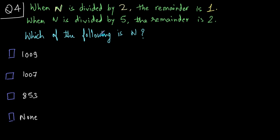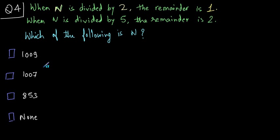On to the fourth question. You could solve this using the division formula — dividend equals divisor into quotient plus remainder — but that would take time. My suggestion is to try all the options. You need to find the number n from the given options such that when divided by 2 the remainder is 1, and when divided by 5 the remainder is 2.